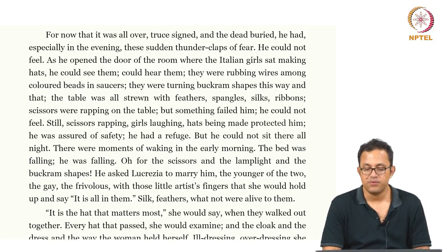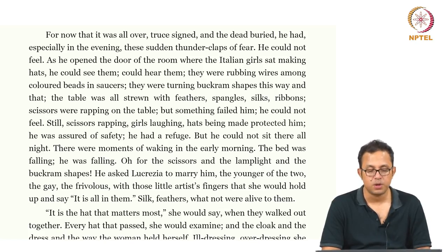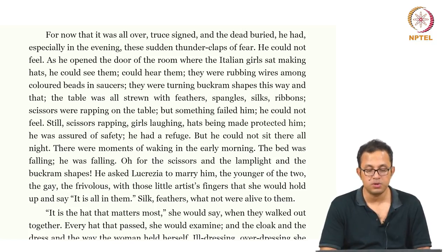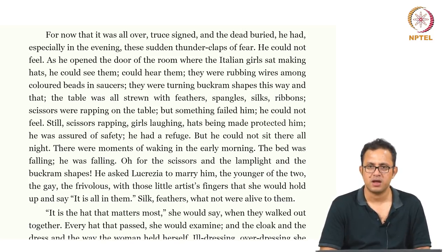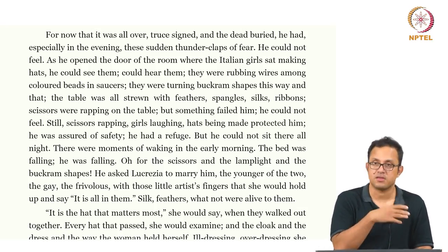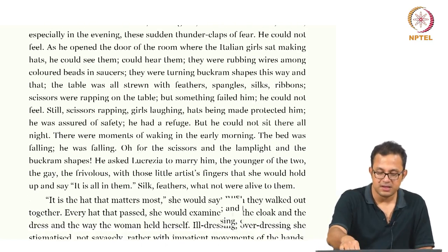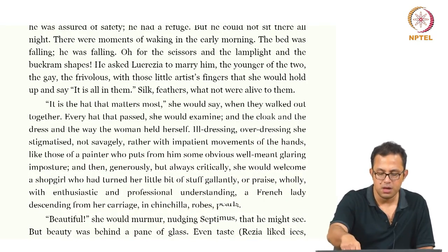He was assured of safety and had a refuge, but still he could not sit there all night. There were moments of waking in the early morning — the bed was falling, he was falling. He asked Lucrezia to marry him — the younger, the gay, the frivolous one with those little artist's fingers. The tragedy of Lucrezia gets accentuated here: she ends up married to a man who, out of panic, proposes because he feels he is running out of feelings. Marriage to Lucrezia is an experiment for Septimus; she becomes a victim of this male post-war experiment.